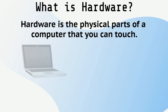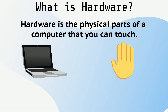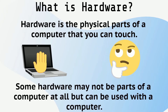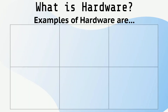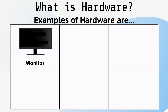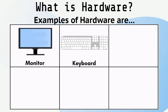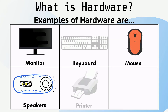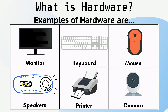Hardware is the physical parts of a computer that you can touch. Some hardware may not be parts of a computer at all, but can be used with a computer. Examples of hardware are a monitor, keyboard, mouse, speakers, printer, or camera.